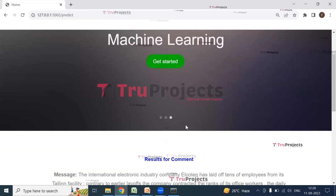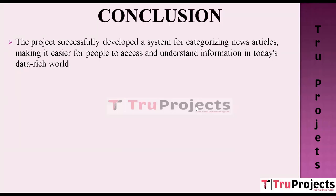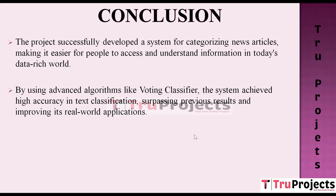The project's primary achievement lies in creating a system capable of efficiently categorizing a vast volume of news articles. In today's data-rich world where information overload is common, this system streamlines the process of sorting and classifying articles, making it easier for users to find information quickly and accurately. The use of advanced machine learning algorithms such as the Voting Classifier combines the strengths of various models to achieve high accuracy in text classification.